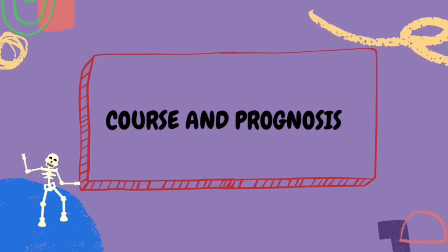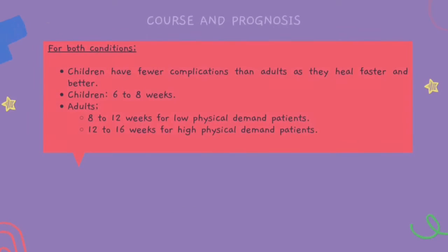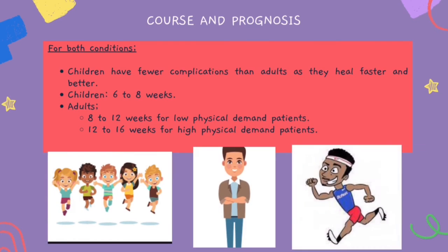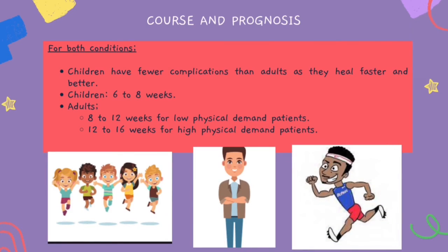For course and prognosis of both conditions, children have fewer complications than adults as they heal faster and better, usually healing after 6 to 8 weeks of treatment. For adults, low physical demand patients will fully heal after 8 to 12 weeks of treatment, while patients with high physical demands such as athletes usually take 12 to 16 weeks of treatment.